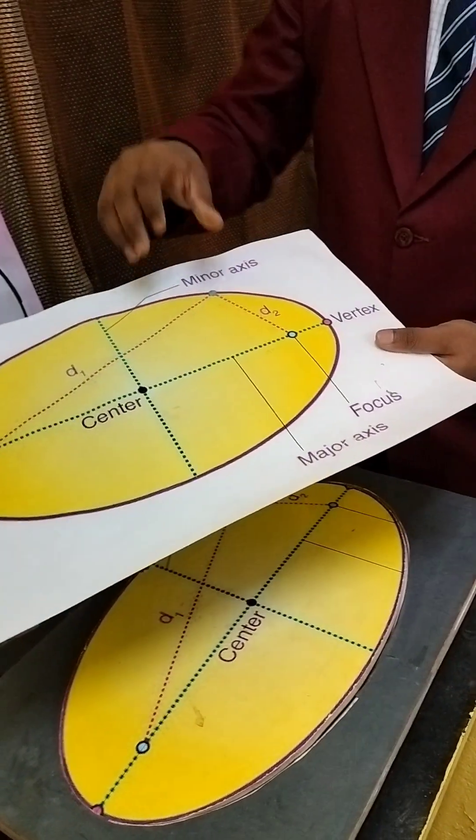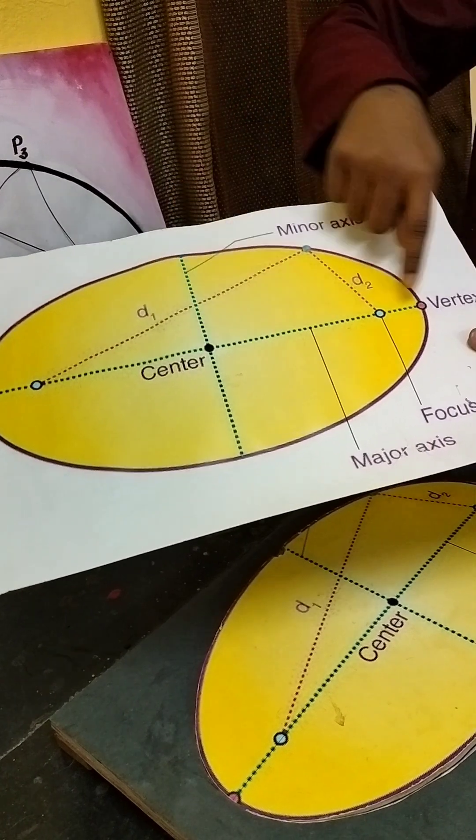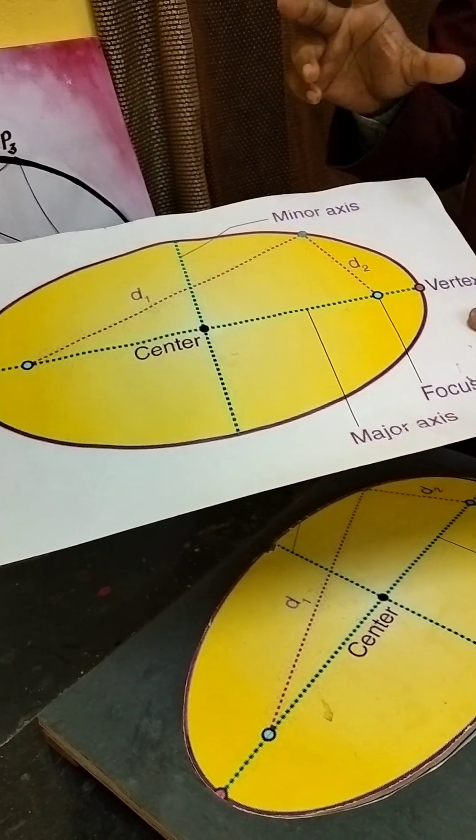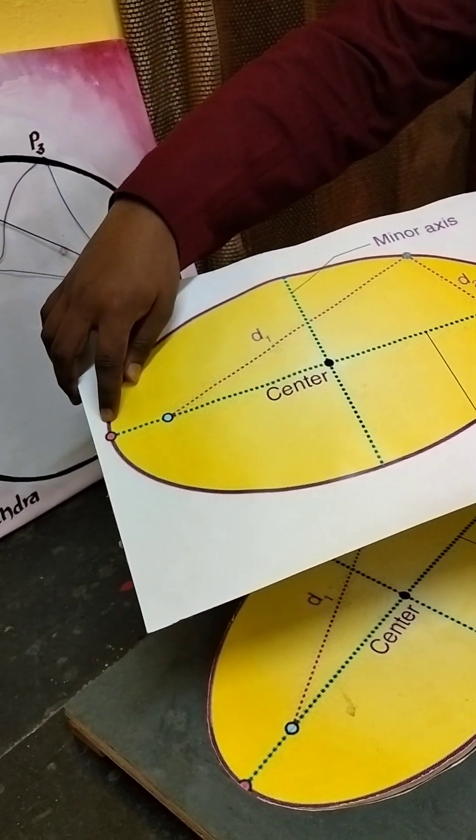The half length of the major axis from center to the vertex is called A. So the coordinate here becomes (A, 0) and the coordinate on that side becomes (-A, 0).